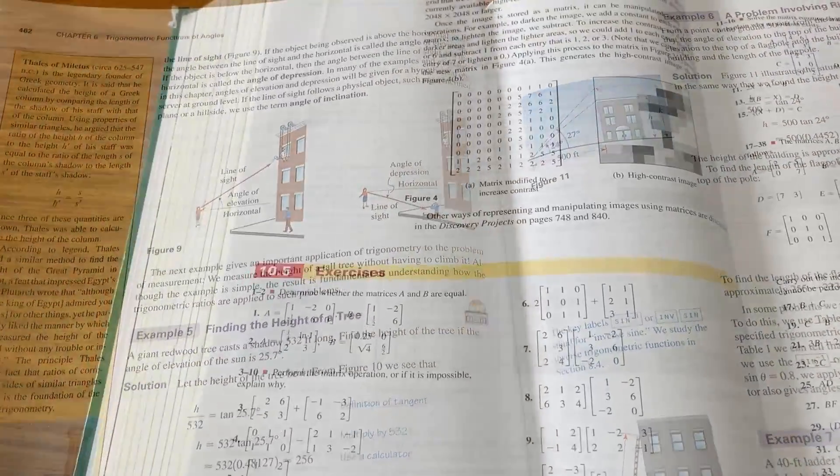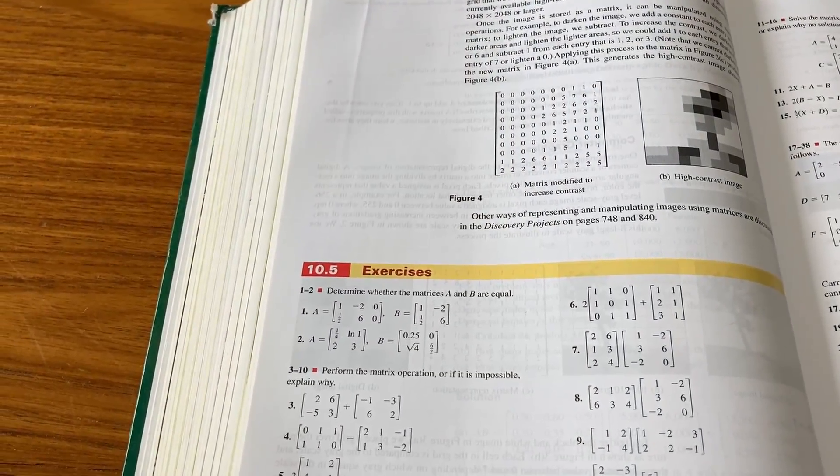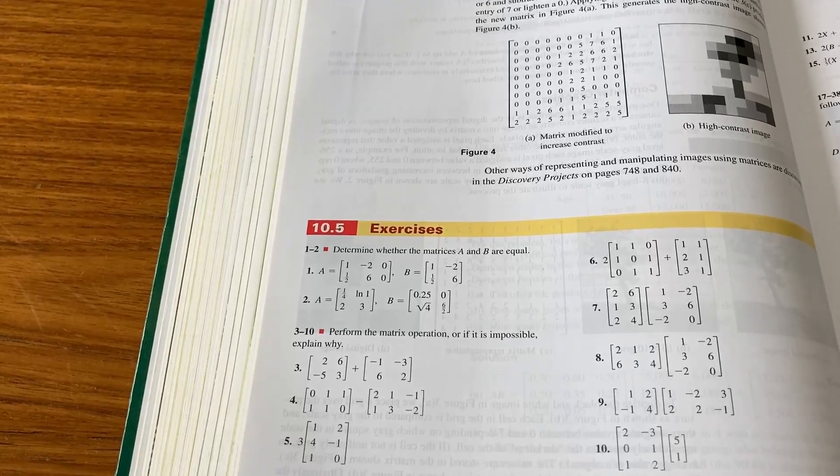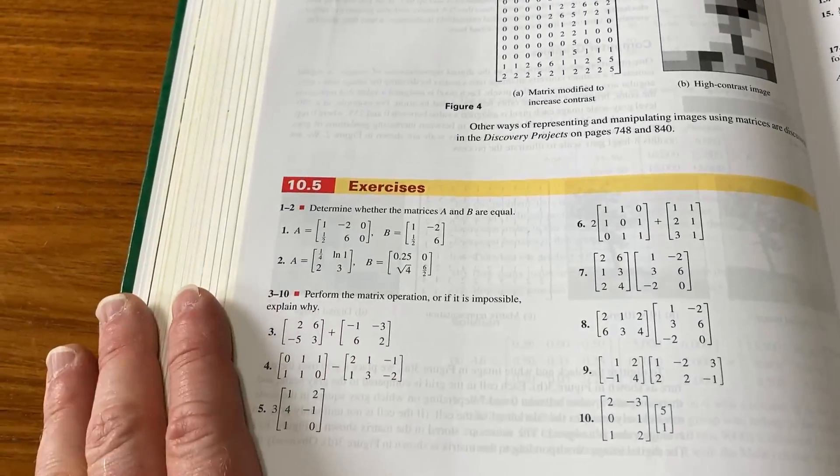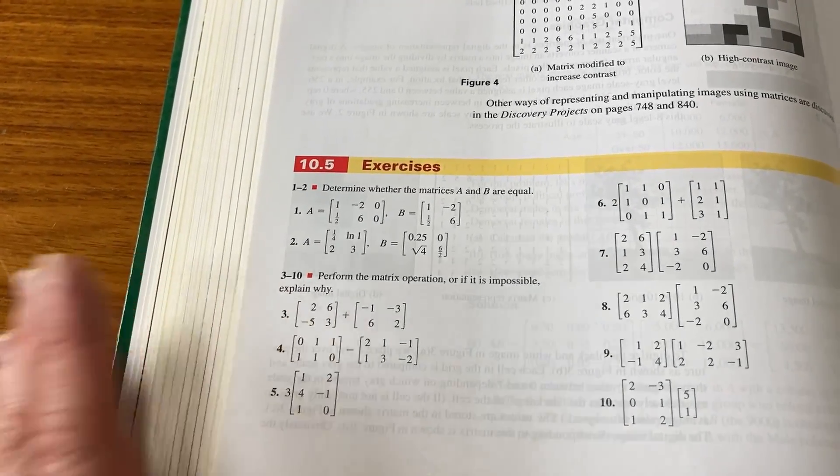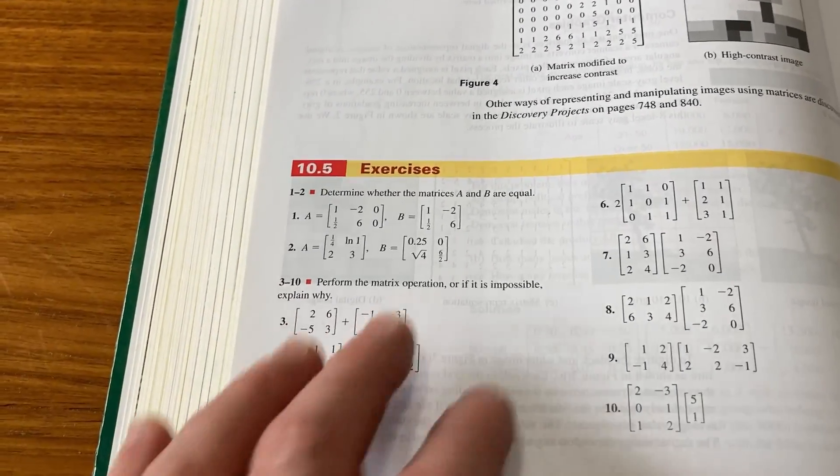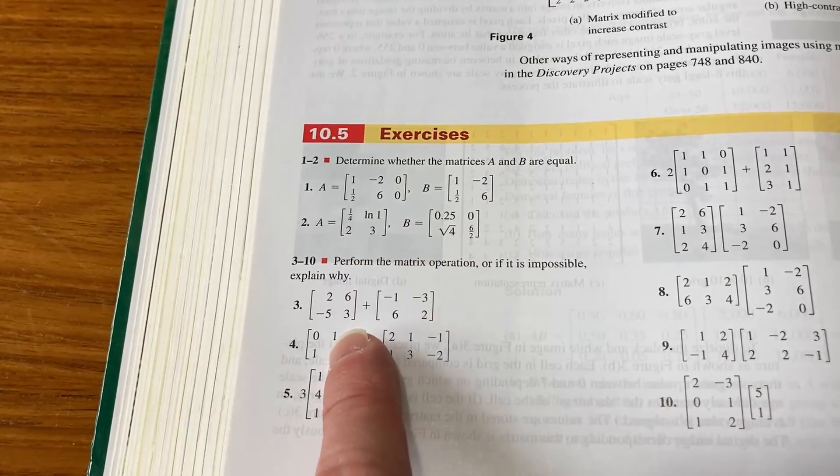And then you go to the next section and you repeat the process. The really good thing about books like this, these algebra and trig books, is that they have so many topics. For example, this is section 10.5, and it's on the algebra of matrices. So if you're working on trig and you're feeling defeated, or maybe you're working on algebra and you're just tired of that, you could find other stuff in here like matrix algebra.